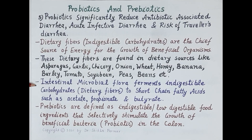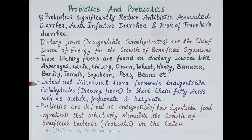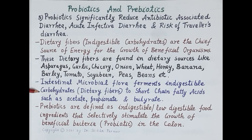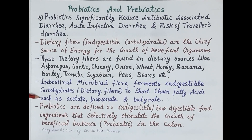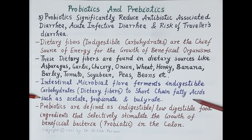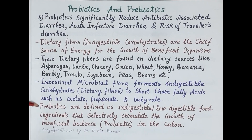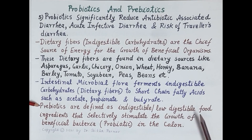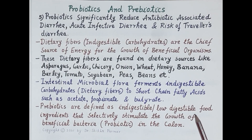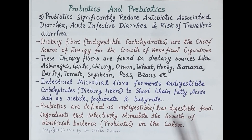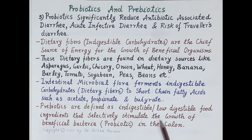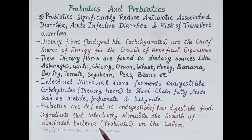Intestinal microbial flora ferments indigestible carbohydrates — the dietary fibers — to short chain fatty acids such as acetate, propionate, and butyrate. These short chain fatty acids produced by beneficial bacteria are very useful for the body. Prebiotics are defined as indigestible or low-digestible carbohydrates, that is dietary fibers, that selectively stimulate the growth of beneficial bacteria, or probiotics, in the colon.